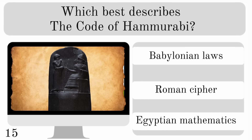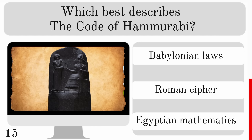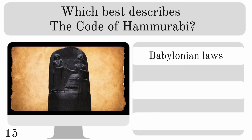Which best describes the Code of Hammurabi? Was it Babylonian laws, a Roman cipher or Egyptian mathematics? And the answer — Babylonian laws.